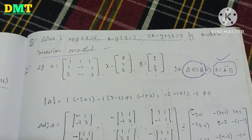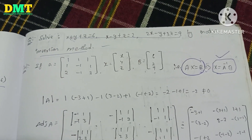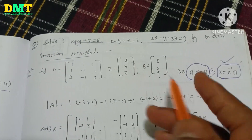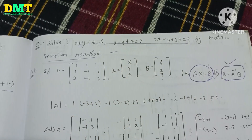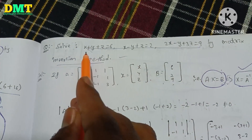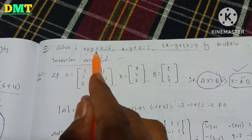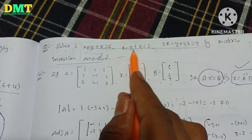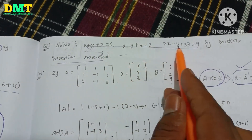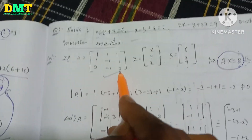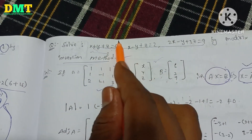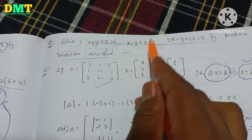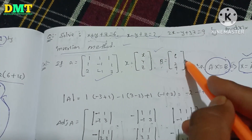First, we find out the values of A, X, and B. Matrix A is: 1, 1, 1 / 1, 1, minus 1 / 1, 2, minus 1. X is the column vector x, y, z. And B equals the column vector 6, 2, 9. So AX equals B.